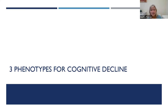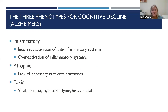Now, remember, all of this — everything that we're doing — is based on the three phenotypes of cognitive decline that Bredesen uses: inflammatory, atrophic, and toxic. Those are the things that we're going to go into more next time.